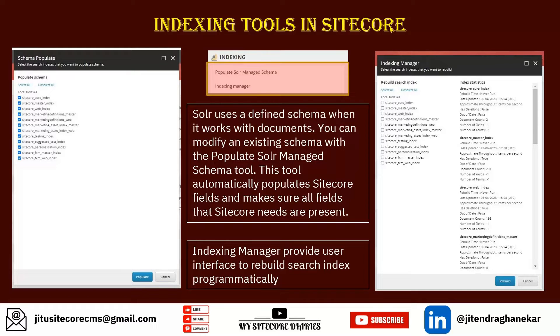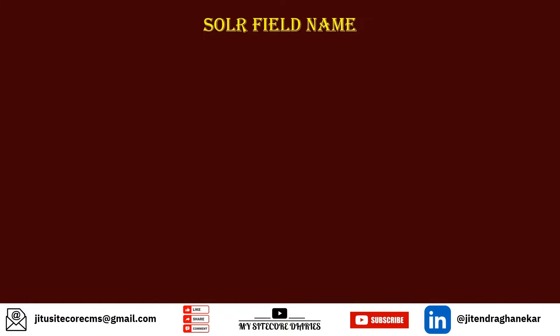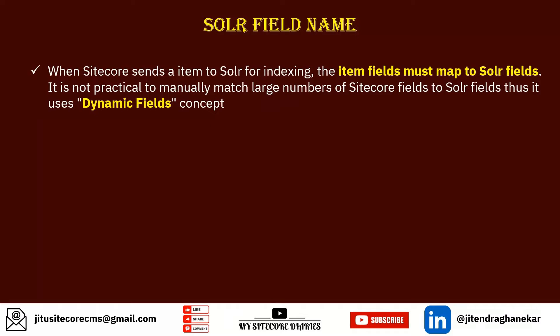Now let's look at Solr field names. When Sitecore sends an item to Solr for indexing, the item's fields must map to Solr fields. Sitecore has fields like name and title, and corresponding Solr fields must exist. You need to map Sitecore fields to Solr fields.